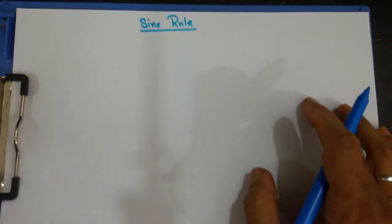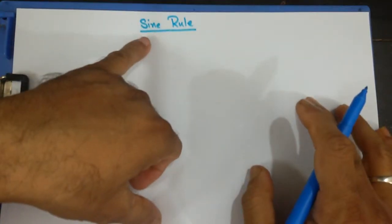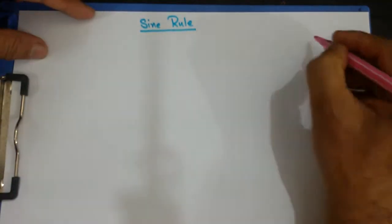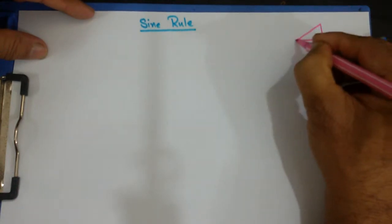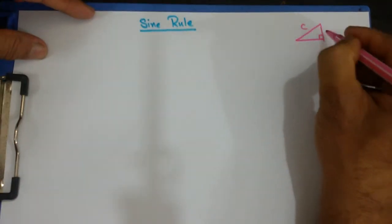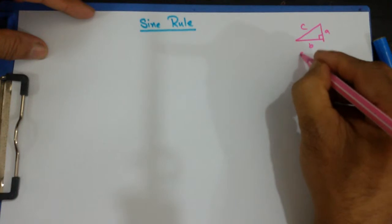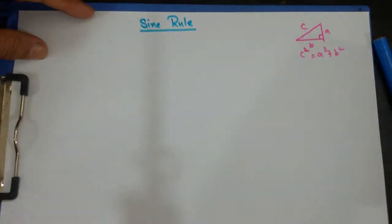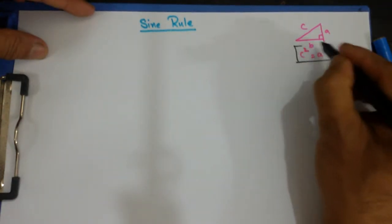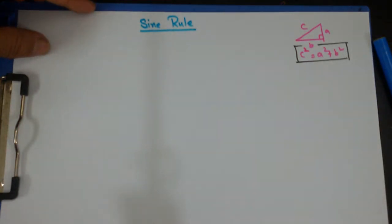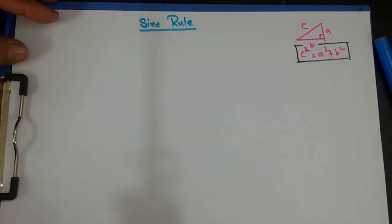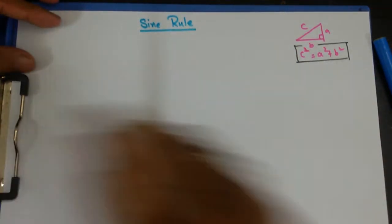Good morning, students. Welcome to today's lecture. I'll cover the sine rule. You know that if we had a right-angle triangle, we can use the Pythagoras theorem — hypotenuse squared equals the sum of the other two sides squared. We have done that in our previous lecture and some other videos. What happens if you have a triangle that is not a right-angle triangle?